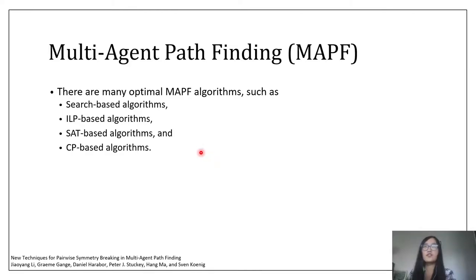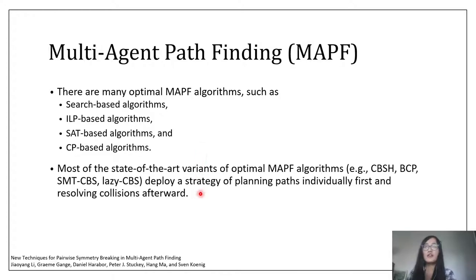There are many algorithms for solving this problem optimally. For example, we can use A-star to search in the joint state space, or we can model the problem as a multi-commodity flow and solve it by an integer linear programming solver. However, since the joint state space grows exponentially in the number of agents, these methods usually do not scale well.